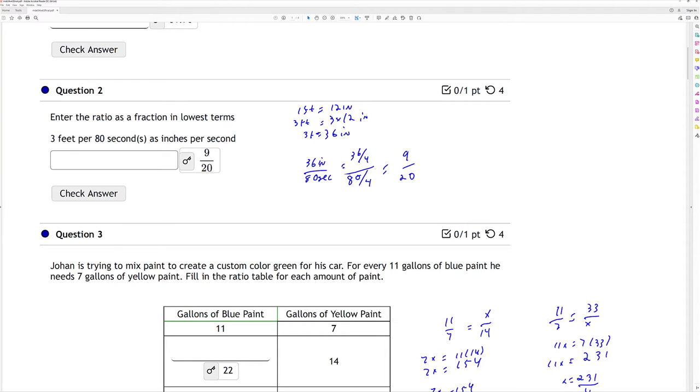They wanted it as inches per second, so I have to convert those feet into inches. 1 foot is 12 inches, so I multiply both sides by 3. So 3 feet is 36 inches. I have 36 inches to 80 seconds. I divide my numerator by denominator by 4, and I have 9 over 20 as a fraction there in lowest terms.